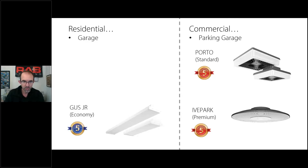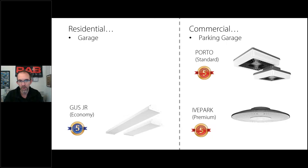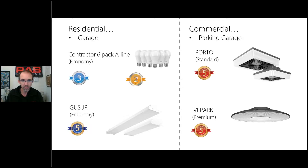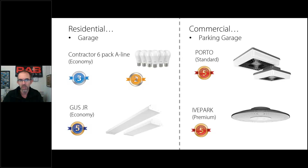In a residential garage, you would use something like the Gus Jr. The Gus Jr. has a prismatic lens with two strips of light, making it look like the fluorescent solution we've seen so many times before. And then there's the contractor six-pack — a 60-watt equivalent and a 100-watt equivalent — recently introduced, a great product from a residential standpoint for garage door openers with a medium screw-based socket.